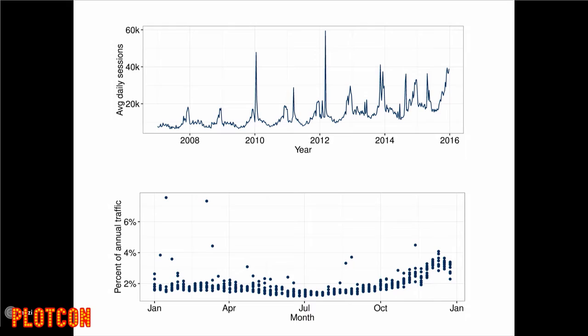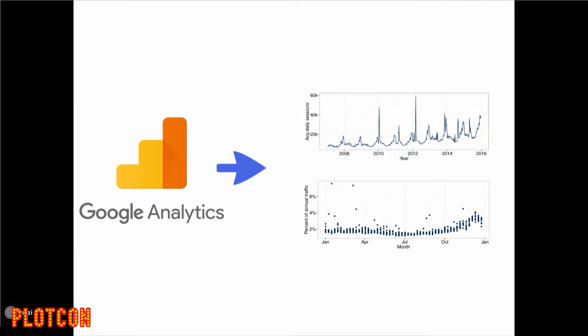That huge spike — around March 2012 — is Kony, the Kony video. The Kony video is linked to a charity called Invisible Children. It went viral and people wanted to know what this place was. That's an example of how Charity Navigator gets used. Pretty much all this stuff you can get right out of the box using Google Analytics, which is free — unless you want access to the raw data from your web logs, in which case it only costs $150,000 a year. Basically, Google Analytics is free and it's incredibly powerful.